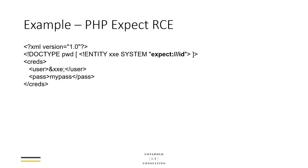The most severe but least likely attack uses the PHP expect module, which gives file-system access to PHP streams. The expect module isn't loaded by default in most instances, but if it is enabled and this type of attack is used, you can effectively inject guesses of passwords into the stream's user context. If those credentials succeed, you can run any kind of PHP functionality on the server — most serious, hardest to pull off, but still a real vulnerability.